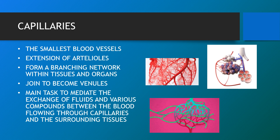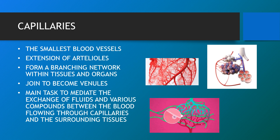Exchange of gases, nutrients and waste between blood and tissue occurs in the capillaries — the smallest blood vessels, only one cell thick with porous walls. Capillaries are tiny vessels that branch out from arterioles to form networks around the body cells. In the lungs, capillaries absorb oxygen from inhaled air into the bloodstream and release carbon dioxide for exhalation. The main task of capillaries is to mediate the exchange of fluid and various components between the blood flowing through them and the surrounding tissues.